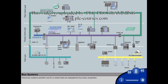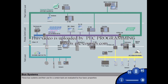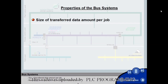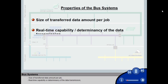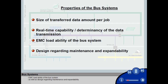These bus systems and their use for a certain task are evaluated by four basic properties: size of transferred data amount per job; real-time capability or determinancy of the data transmission; EMC loadability of the bus system; as well as design regarding maintenance and expandability.